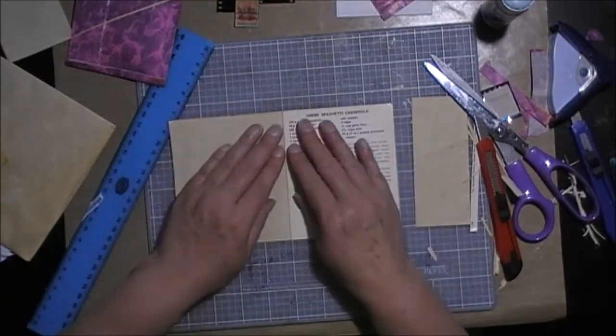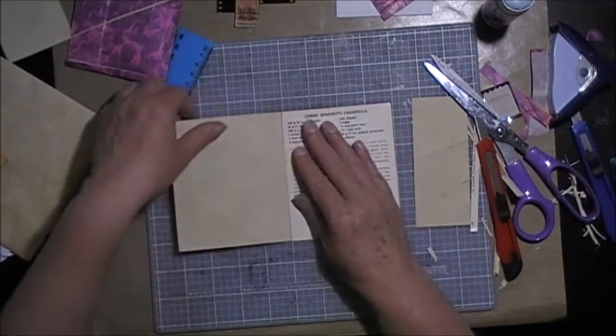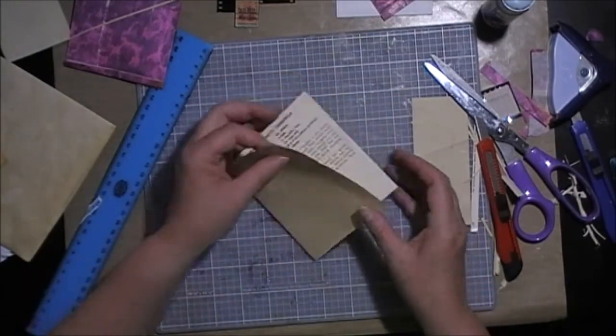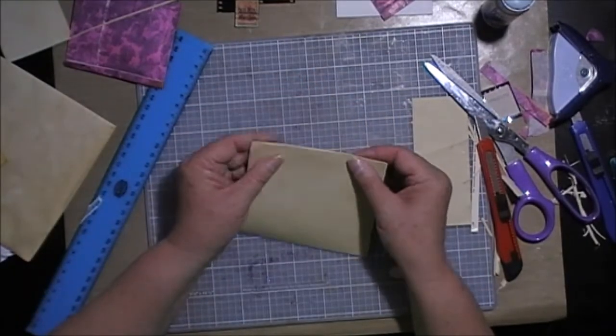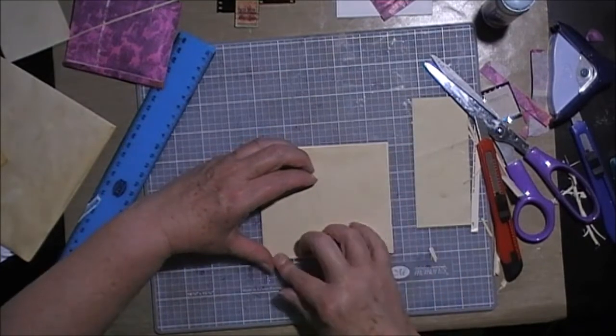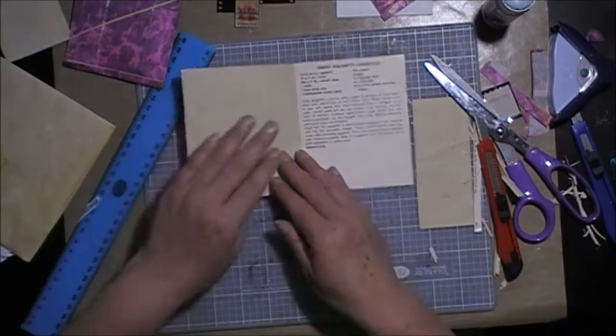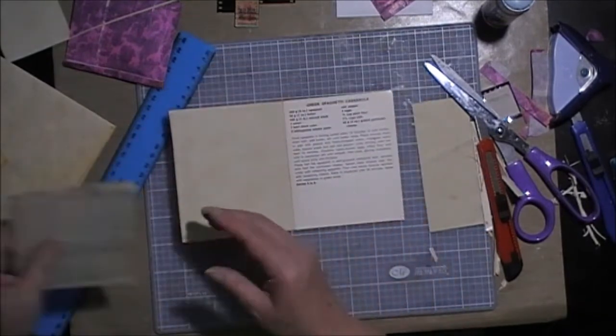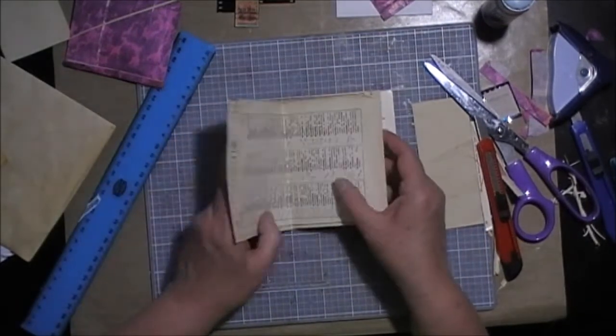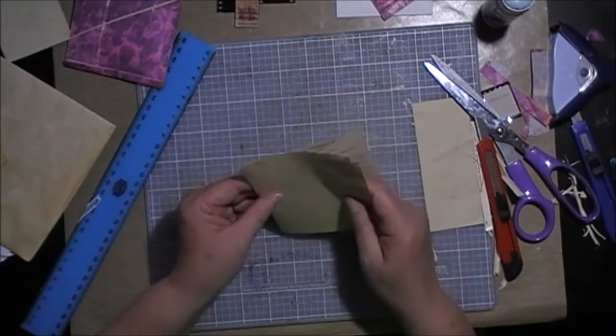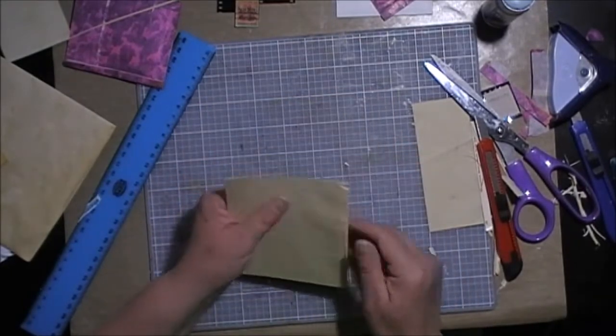So what I will do, it doesn't seem straight to me for some reason. Maybe it was my folding that wasn't straight. What I will do, I will sew those in as well. And I think I'm only going to have those couple of pages, I don't think there's the need for anything else.